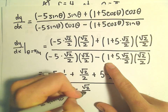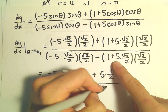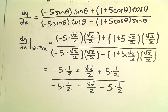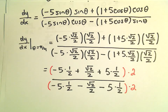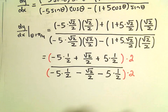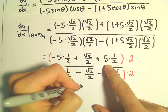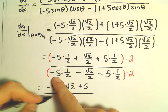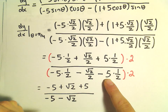We'd end up with a root 2 over 2, and if we distribute we get negative 5 root 2 over 2 times root 2 over 2, which again leaves us with one half. To get rid of all these fractions, multiply the numerator and denominator by 2. In the numerator we're left with negative 5 plus square root of 2 plus 5. In the denominator we get negative 5 minus square root of 2, and then another minus 5.